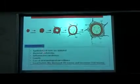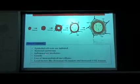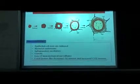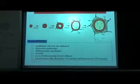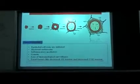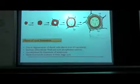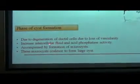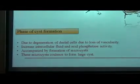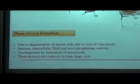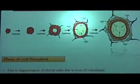In the phase of initiation, the epithelial cell rests undergo proliferation through various triggers such as bacterial endotoxins, inflammatory mediators, genetic factors, or loss of immunological surveillance and local factors which cause decreased oxygen tension and increased CO2 tension. In the phase of cyst formation, there will be degeneration of the inner ductal cells due to loss of vascularity, increased intercellular fluid and acid phosphatase activity, accompanied by formation of microcystic cavities. These microcystic cavities further coalesce to form a large cystic cavity.